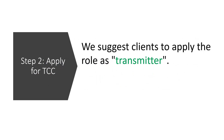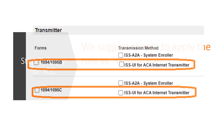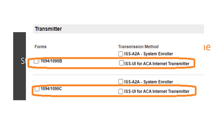Step 2: Apply for your TCC. Software developers, transmitters, and issuers must obtain a TCC to electronically file ACA forms. Once your eServices account is set up, access the ACA application for TCC. We recommend applying for the transmitter role.